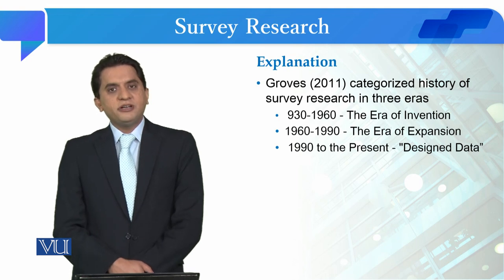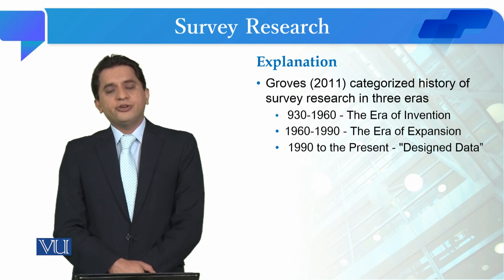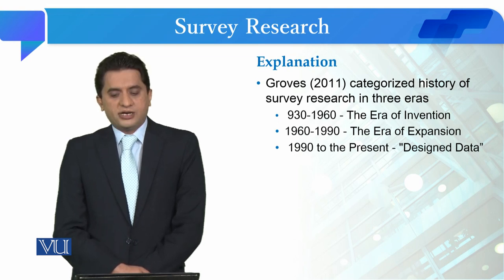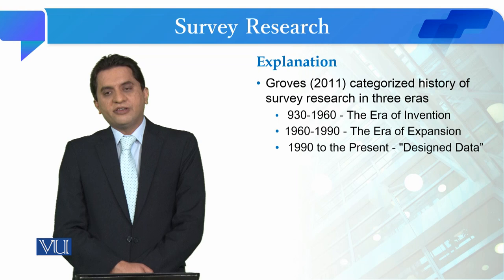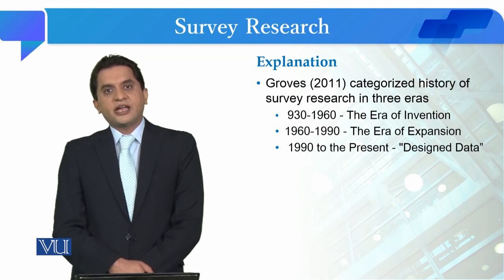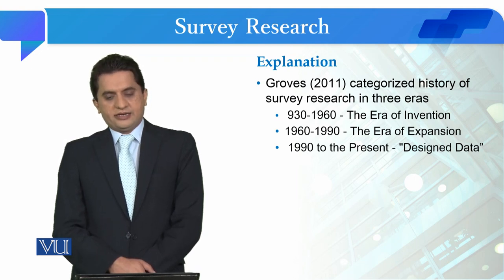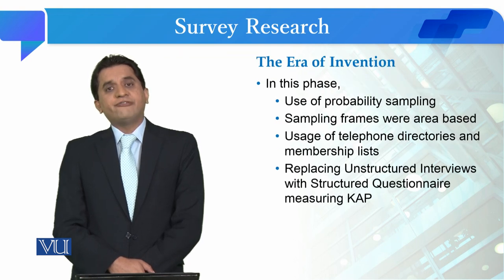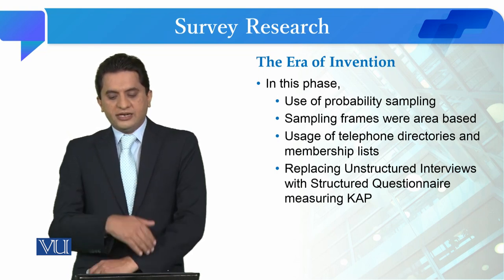In modern times, Groves in 2011 categorized the history of survey research into three eras. From 1930 to 1960, it is called the era of invention. Then 1960 to 1999 is called the era of expansion. And from 1990 to the present, it is called the era of design data. Let's look at the first era, the era of invention, from 1930 to 1960.